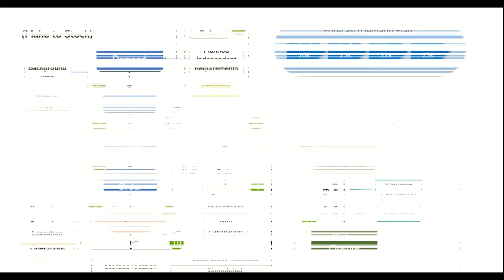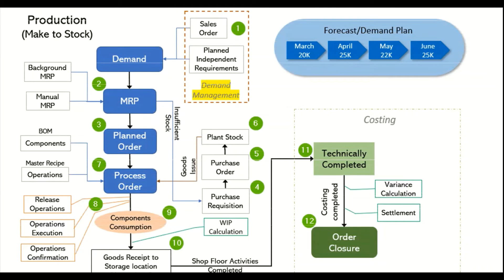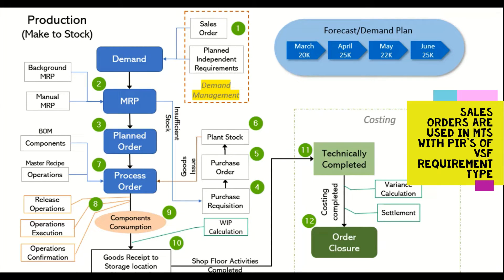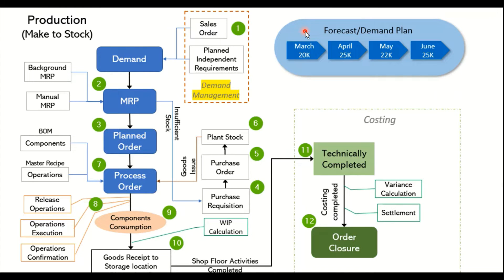In the make-to-stock scenario, production happens for the finished product based on a demand, which can be a safety stock, plan independent requirements, or part of demand management. Let's take an example of a demand plan created by the sales team, where the forecast is based on previous consumption history or sales for that particular product.